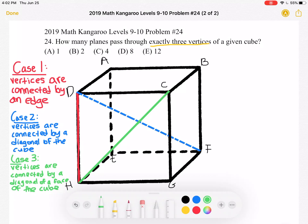And then we have case three where you can have two vertices that are on the diagonal of a face of the cube. Let's start with looking at the first case.